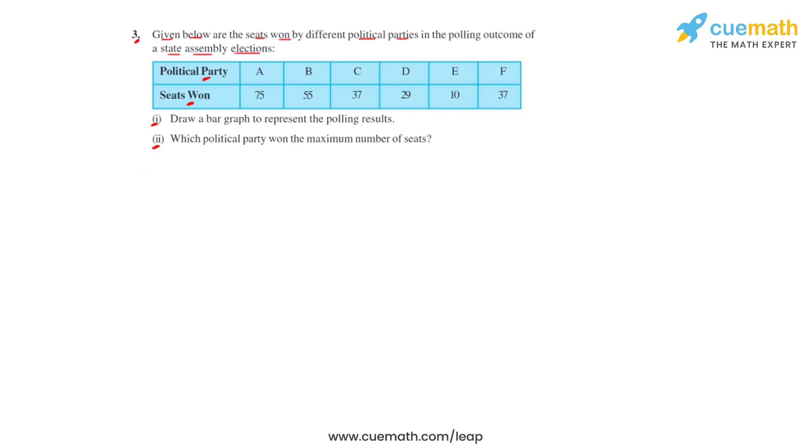The bar graph that we get is this. In this bar graph we can see that we have taken the political parties on the x-axis.